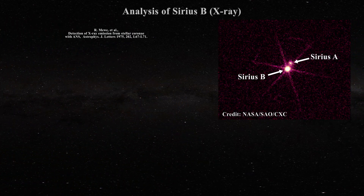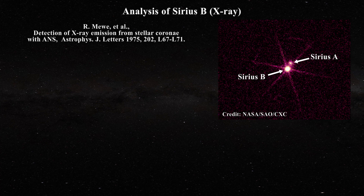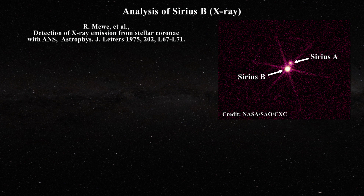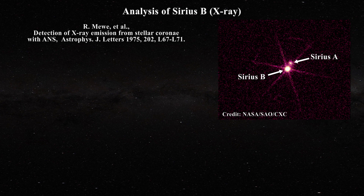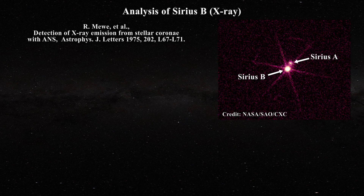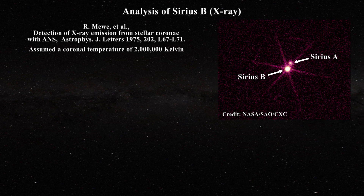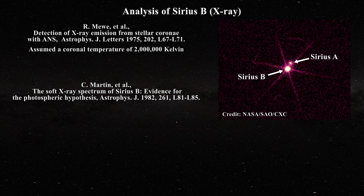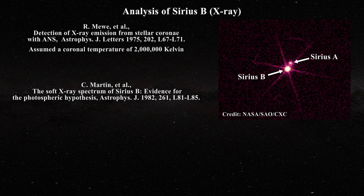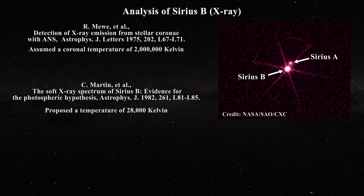Let us begin by discussing x-rays, which Sirius B powerfully emits as seen in this image. Early on, x-ray emissions from Sirius B were claimed to arise from a miniature corona around the star. The authors claimed that the data fit nicely by assuming a certain coronal pressure and temperature of about 2 million Kelvin. However, Martin et al. would analyze soft x-rays and advance a photospheric origin instead, with a proposed temperature of about 28,000 Kelvin.